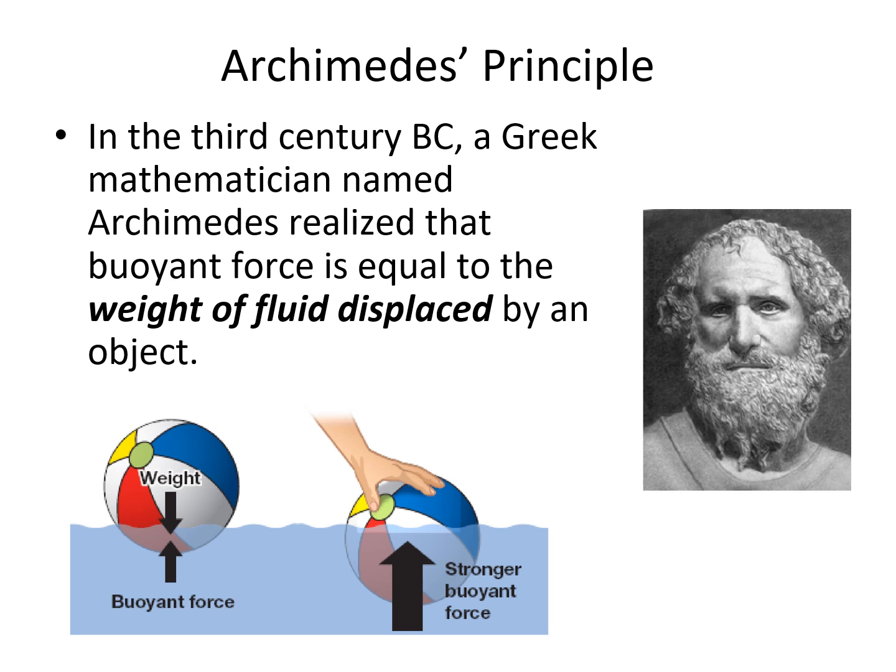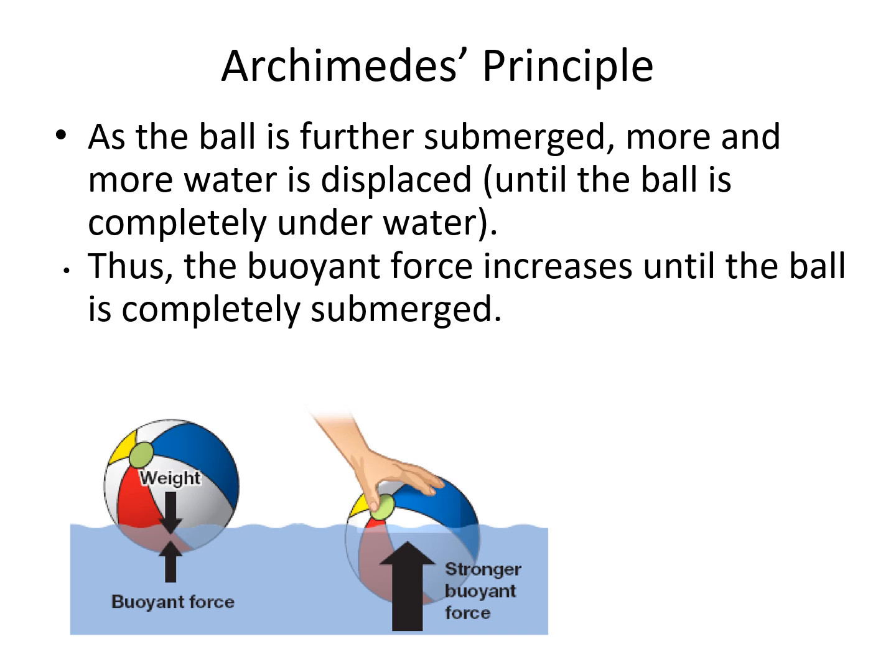Archimedes was a great mathematician and an engineer, and he basically made this discovery in the bathtub. He realized that as he sat in the tub, he was pushing water out of the way. And if his body had been made out of something different, like a rock, it would have pushed just as much water out of the way. So, the buoyant force is caused by the amount of water that you push out of the way.